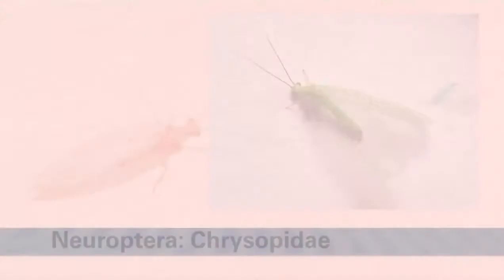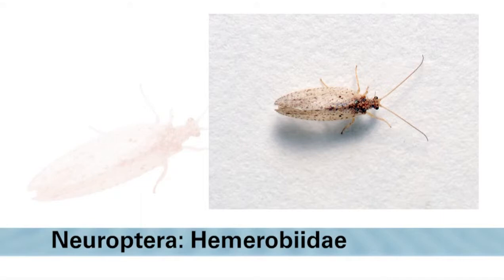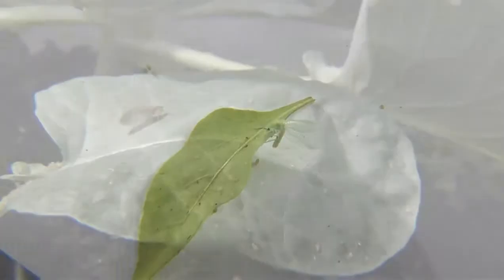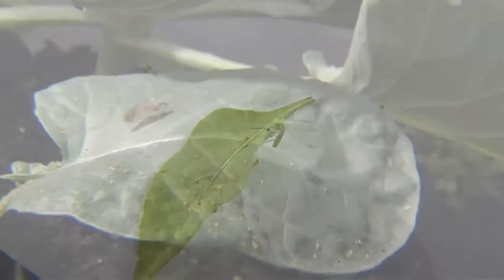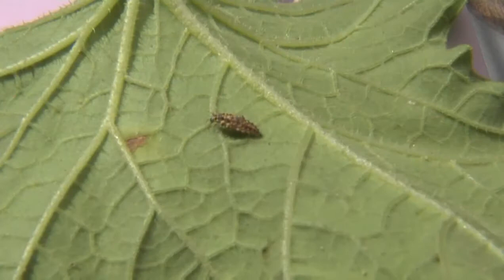Lacewings are also important predators in a large number of vegetable crops. Like beetles, they have complete metamorphosis with egg, larval, pupal, and adult stages. Both green lacewings in the family Chrysopidae and brown lacewings in the family Hemerobiidae can be found in vegetable crops. Adults have long slender bodies and two pairs of intricately veined wings, and are a half inch to an inch in length. Lacewing larvae are alligator-like, with long slender bodies and sickle-shaped mouthparts. They feed on a number of soft-bodied insect pests in vegetable crops, including aphids. A lacewing larva stabs the aphid with its mouthparts and sucks out the body fluids, leaving behind a shriveled exoskeleton.